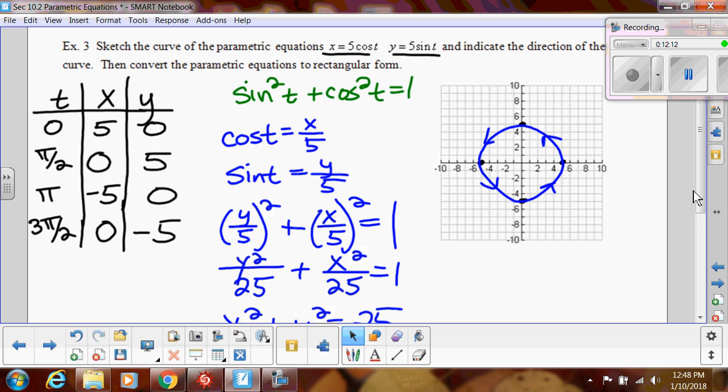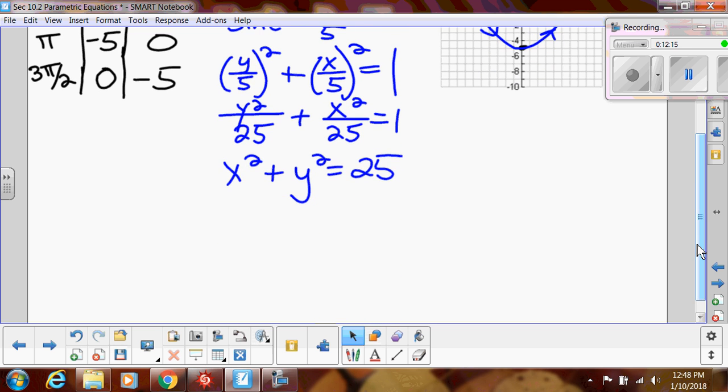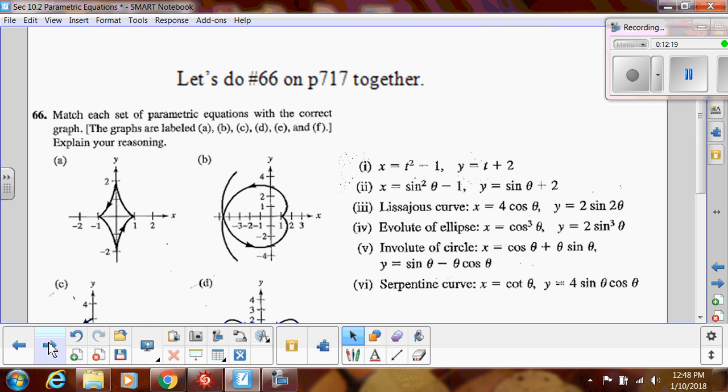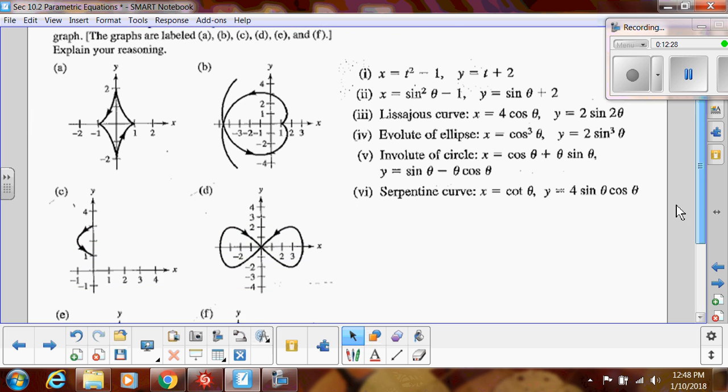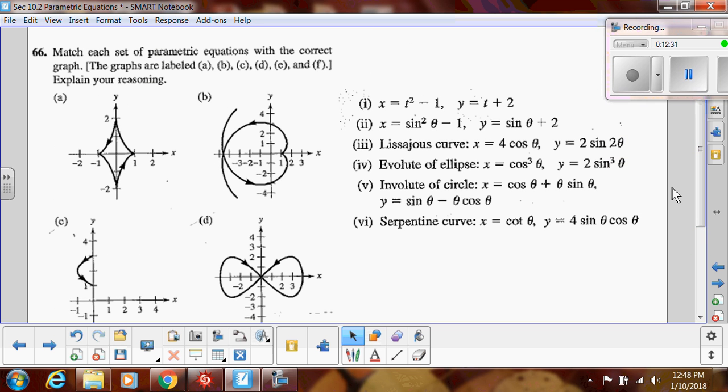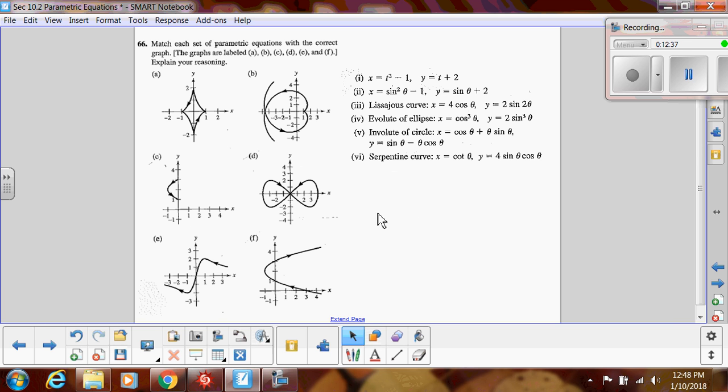The last thing I want to do is show you in your book some graphs. This is on page 717, number 66. So these graphs, we have labeled A, B, C, D, E, F. Maybe I should zoom out a little bit so we can see all of them. But what I want you to do is I want you to match all of these graphs on the left with the parametric equations on the right. So pause the video, stop it, and then try to match them up, and then when you're done, we can go back and talk about it.